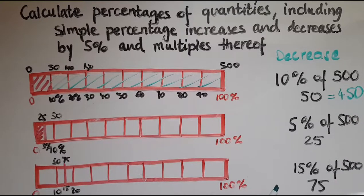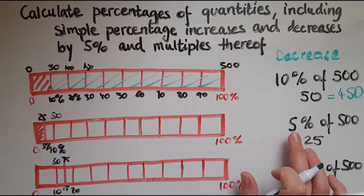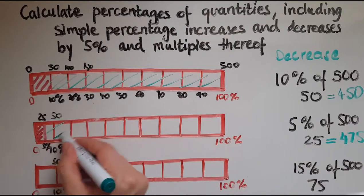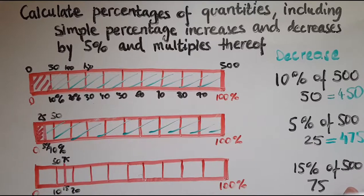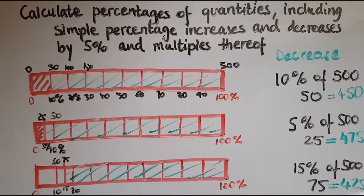So that is the new amount after the 10% decrease. So it's the 90% that's remaining. And if we look at a decrease of 500 by 5%, that means we're taking away 25 from it, so that is 475. And if we decrease 500 by 15%, that is going to be 425. So work out what you're decreasing by and take it away from the full amount.